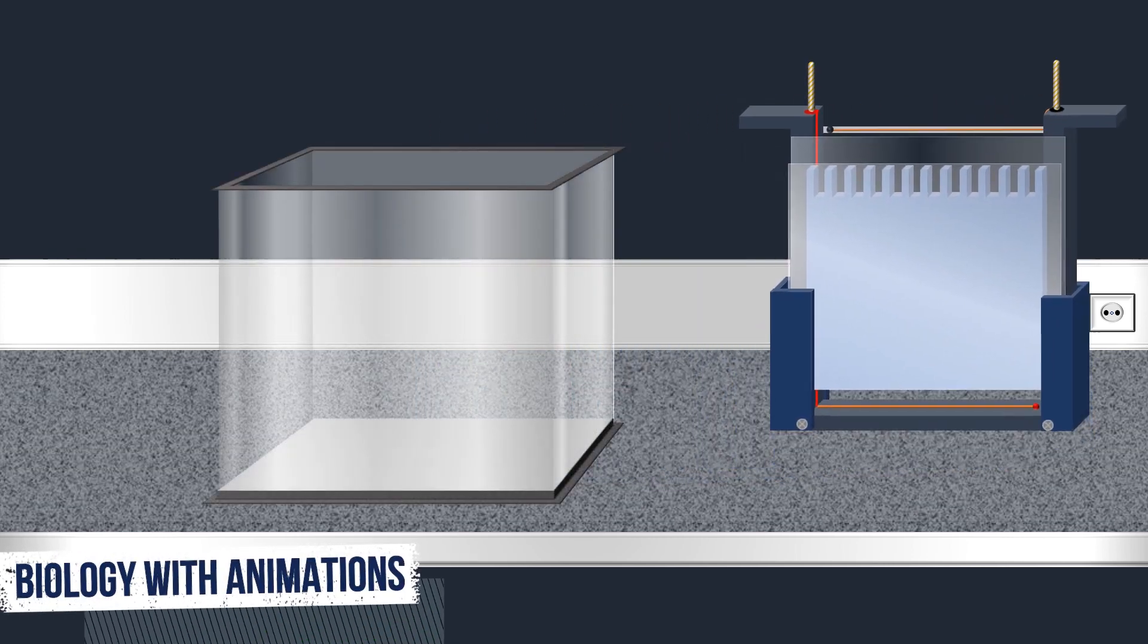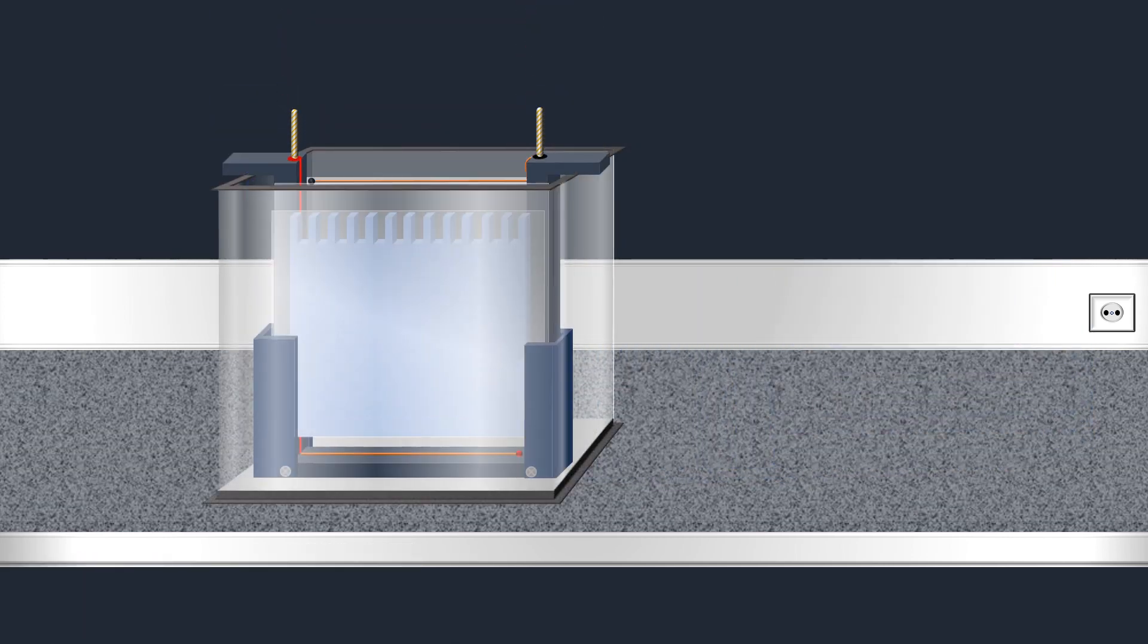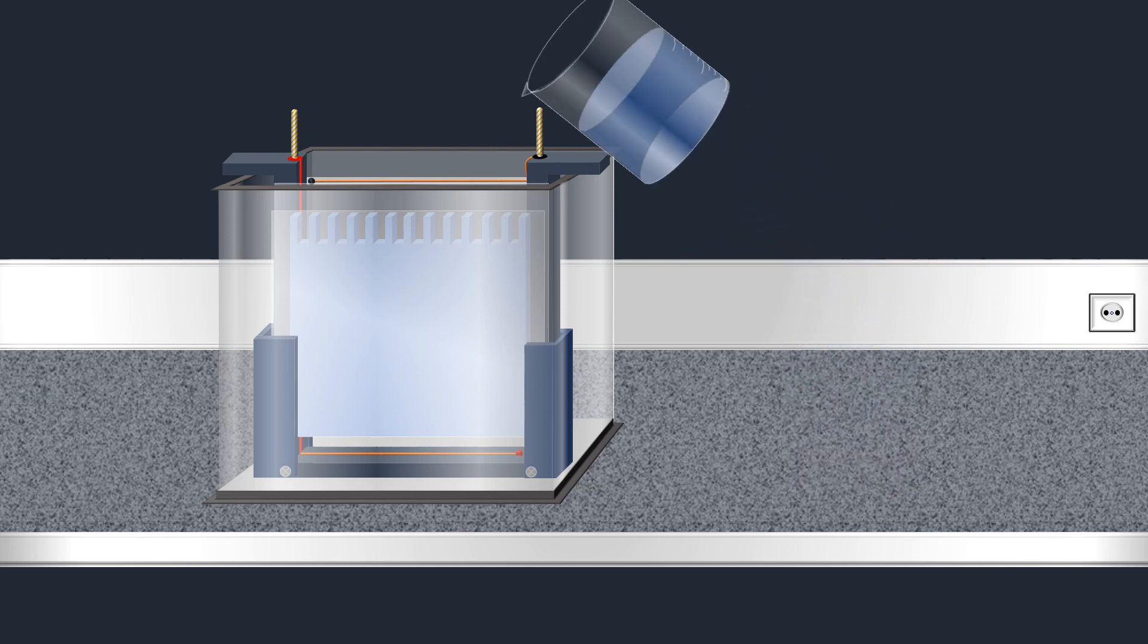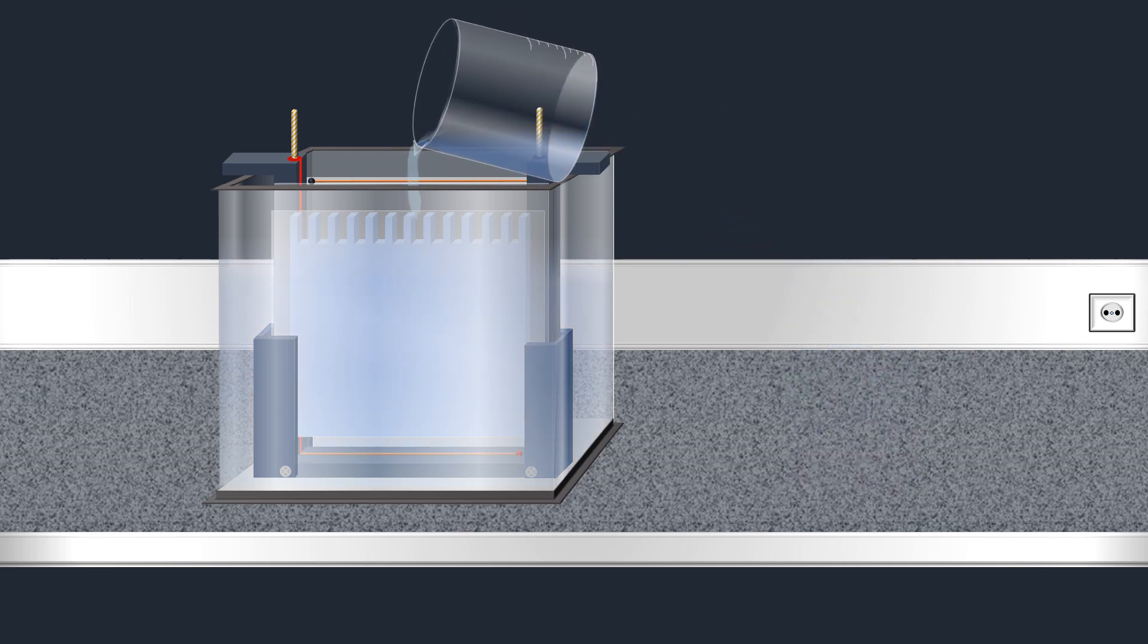The gel is inserted into a chamber and a tris-glycine chloride buffer system with pH 8.3 is poured to allow the conduction of current through the gel. SDS is also present in the gel and in the running buffer to make sure that once the proteins are denatured, they stay that way throughout the run.